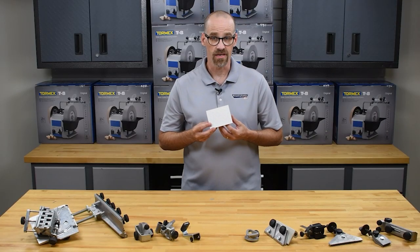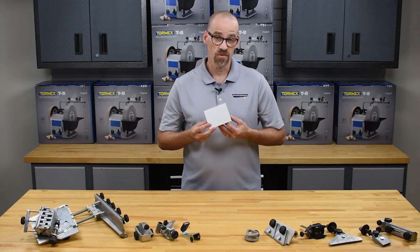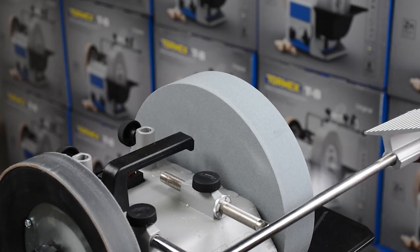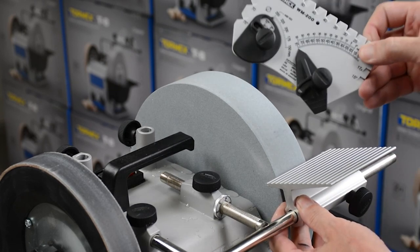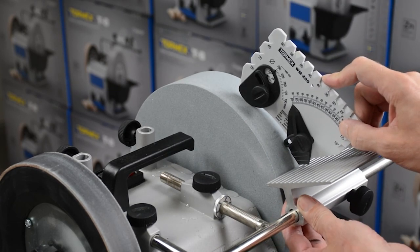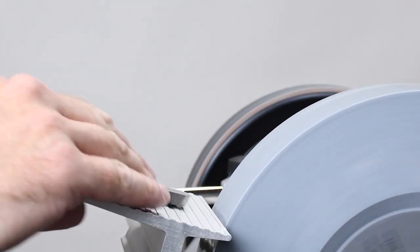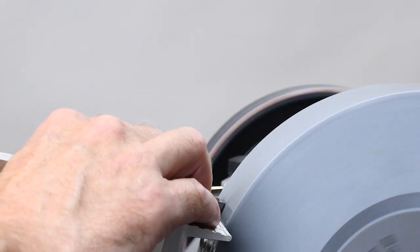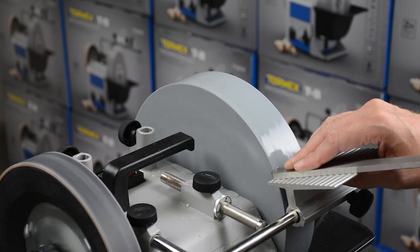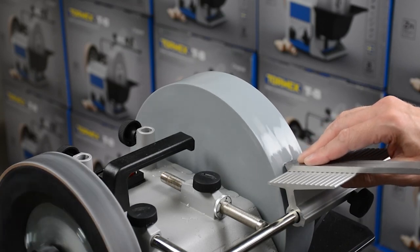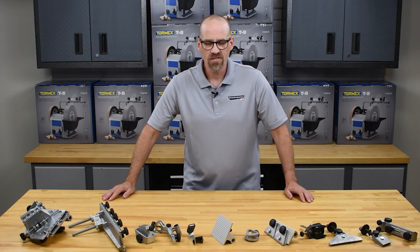The SVD110 tool rest is great for wood turning scrapers and tools that don't fit in any of the other jigs. Slide the tool rest onto the universal support. Use the WM200 Angle Master to set the desired angle.